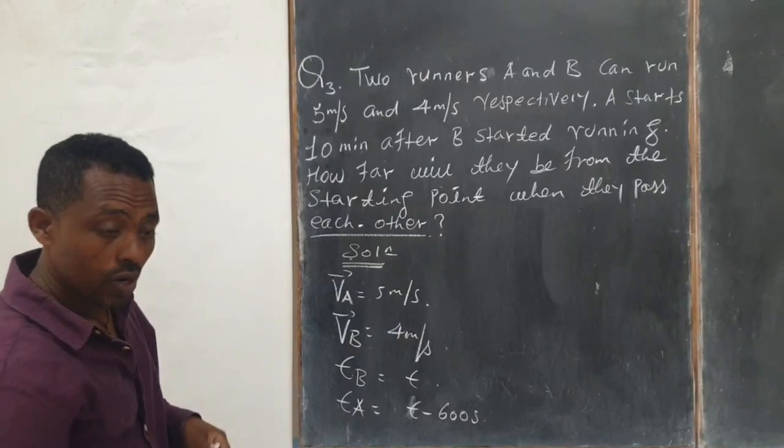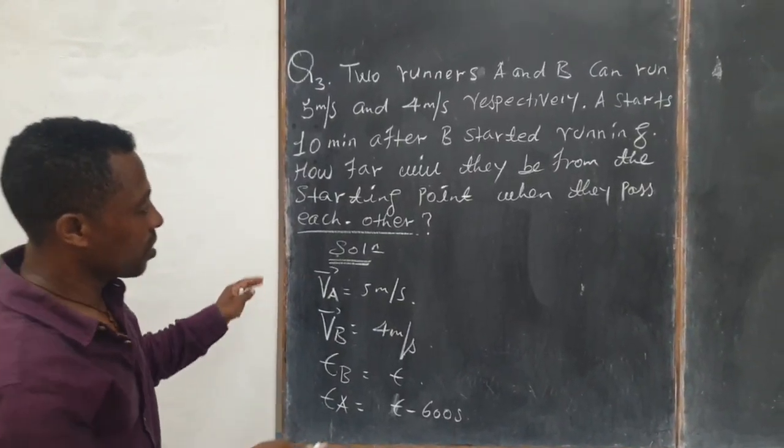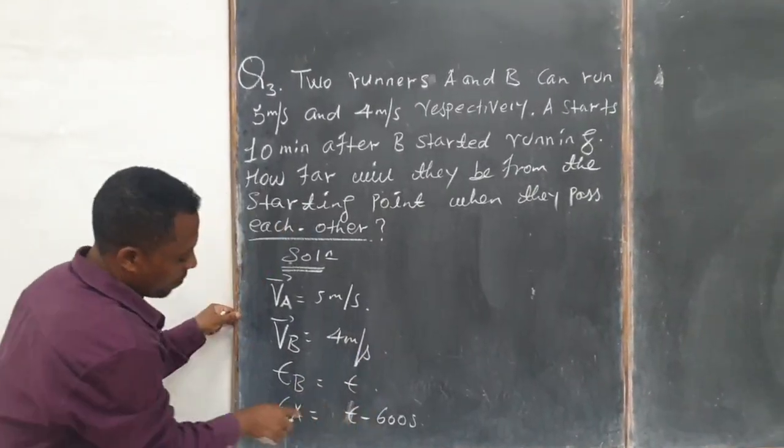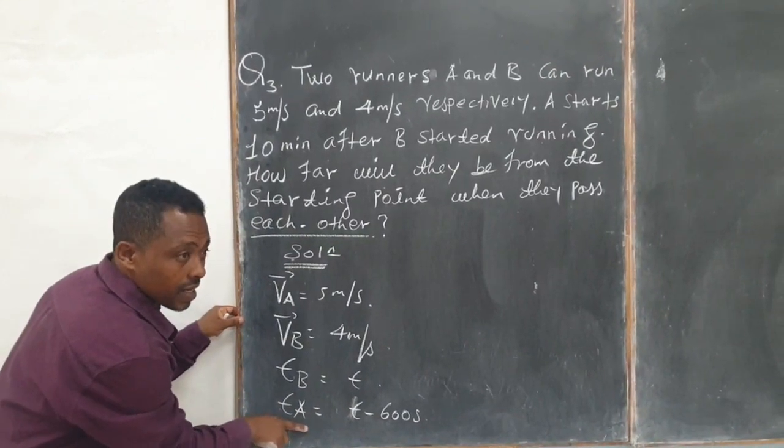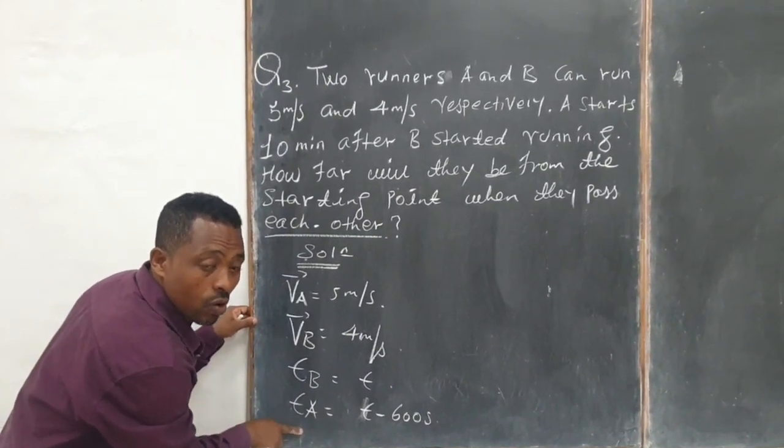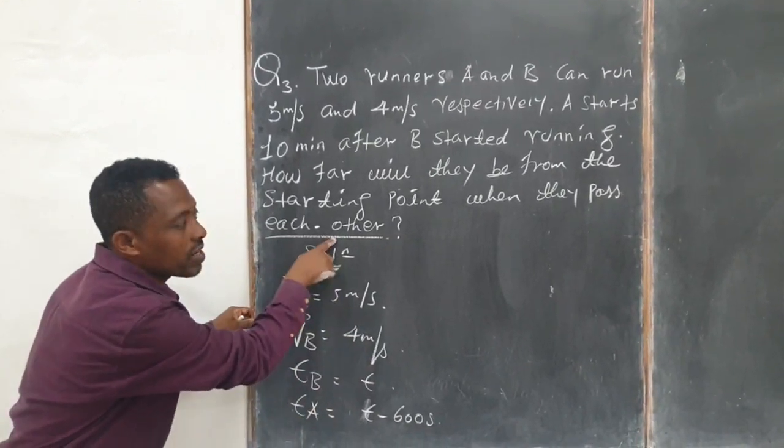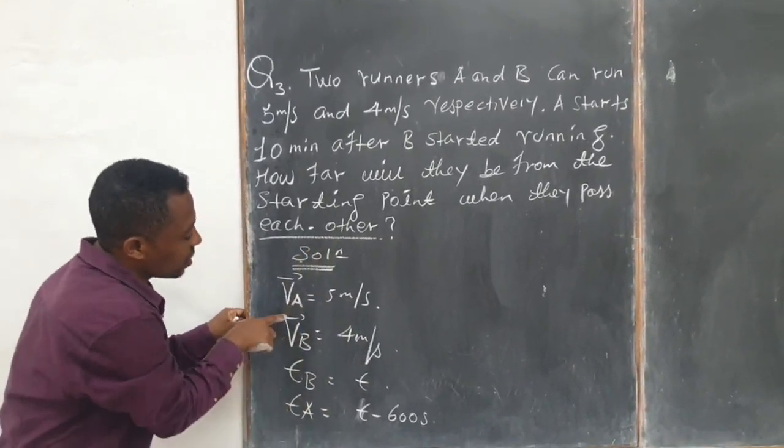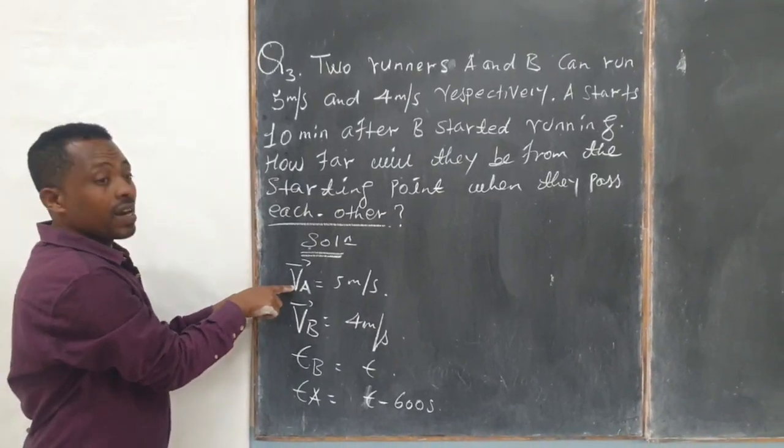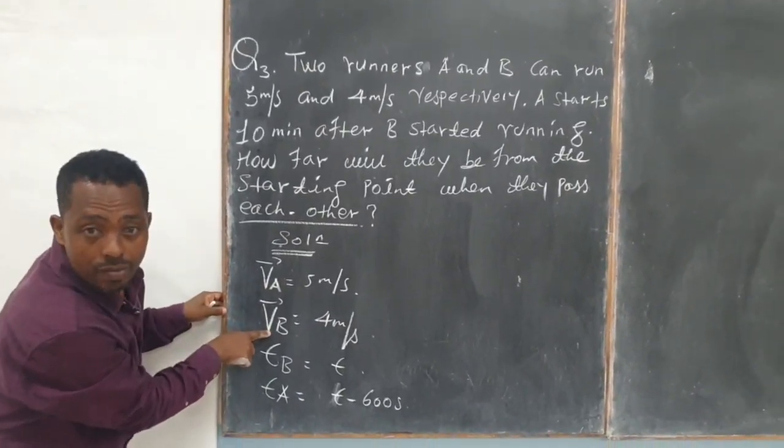Great. If so, what we have to do now? Look, even if runner A is late by 10 minutes or by 600 seconds, they pass each other. That means the distance of runner A and the distance of runner B is the same.